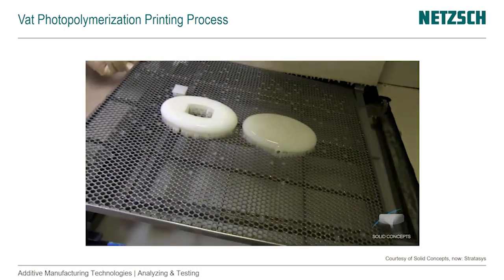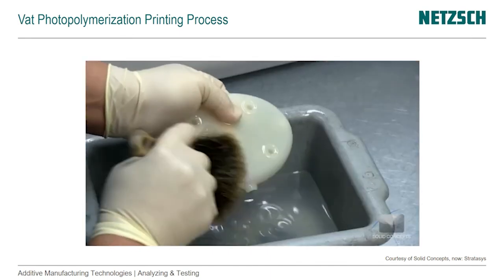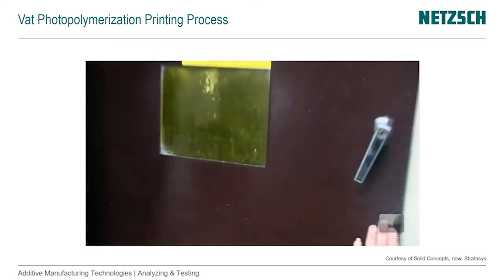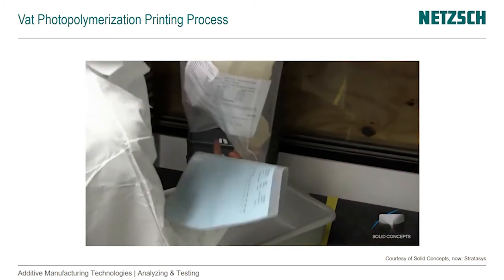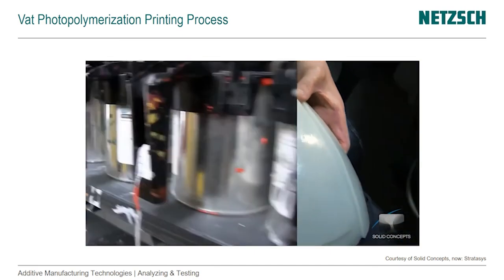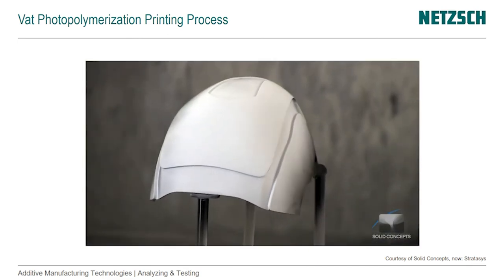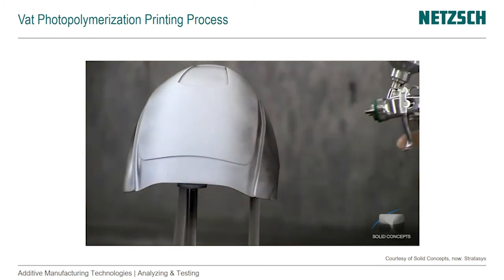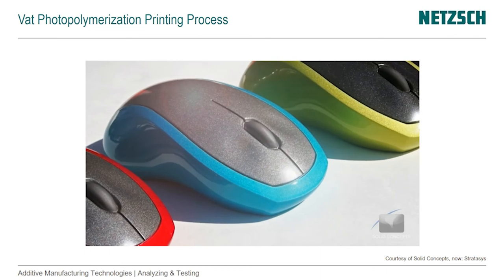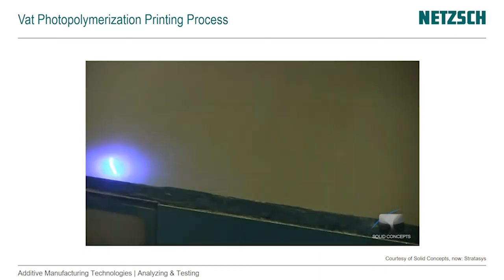The completed part is then carefully removed from the liquid and separated from the platform. A chemical bath removes excess resin, and the part is cured in an ultraviolet oven. Any support structures are removed at this time. With numerous hand sanding and professional paint options available through service providers such as Solid Concepts, stereolithography has become an excellent economic choice for rapid appearance models. A wide variety of industries have embraced SLA, including medical, automotive, entertainment, aerospace, and consumer products.